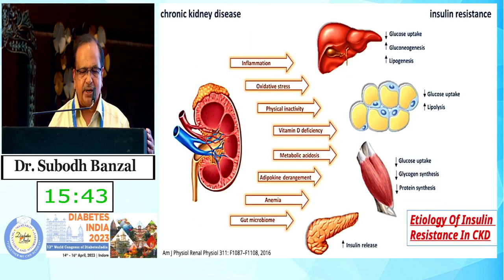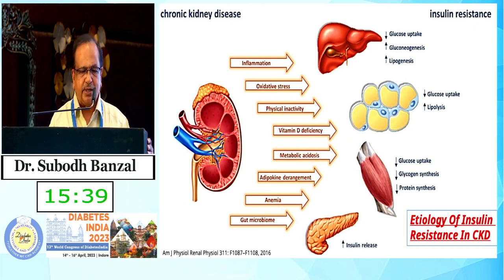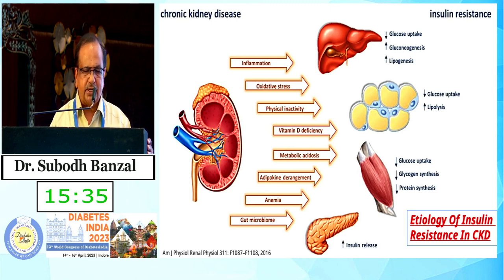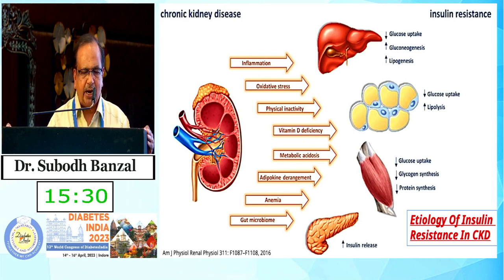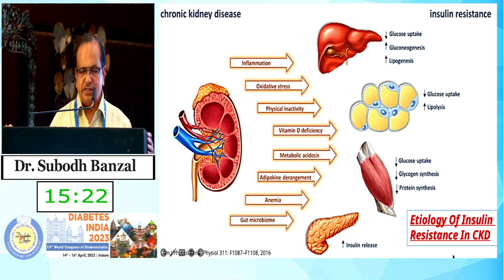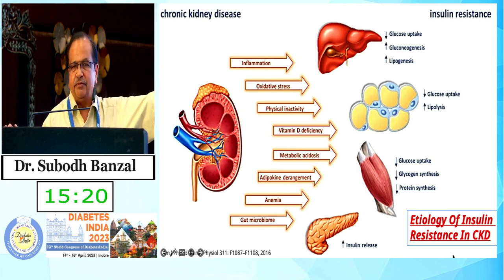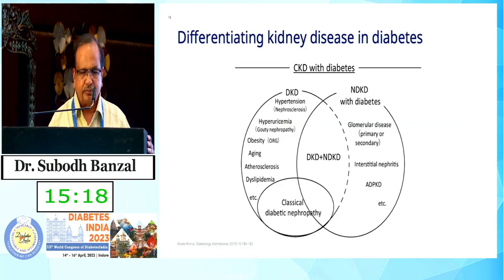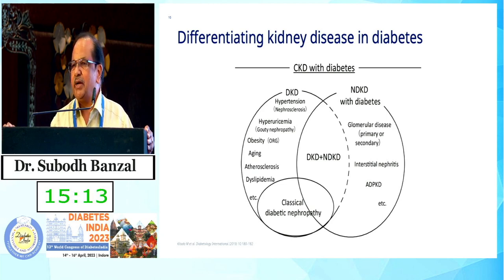These patients may also have insulin resistance due to inflammation, oxidative stress, physical inactivity, vitamin D deficiency, metabolic acidosis, adipokine derangement, anemia, and gut microbiota changes — all contributing to further hyperglycemia through various mechanisms.